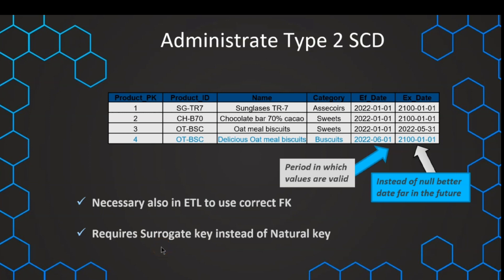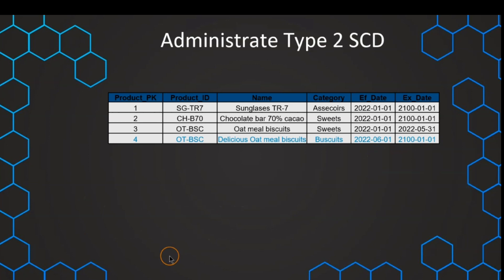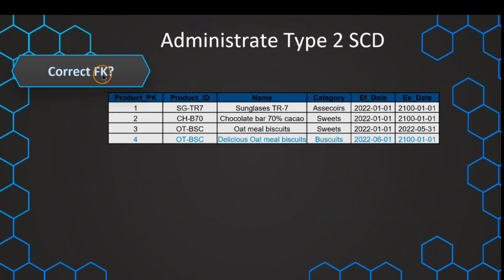There are many advantages we've already seen with the surrogate key, and we should always use a surrogate key anyway. But with type 2, we absolutely need the surrogate key — it would not be possible without it. Now the question is: how can we make sure to use the correct foreign key in our fact table?